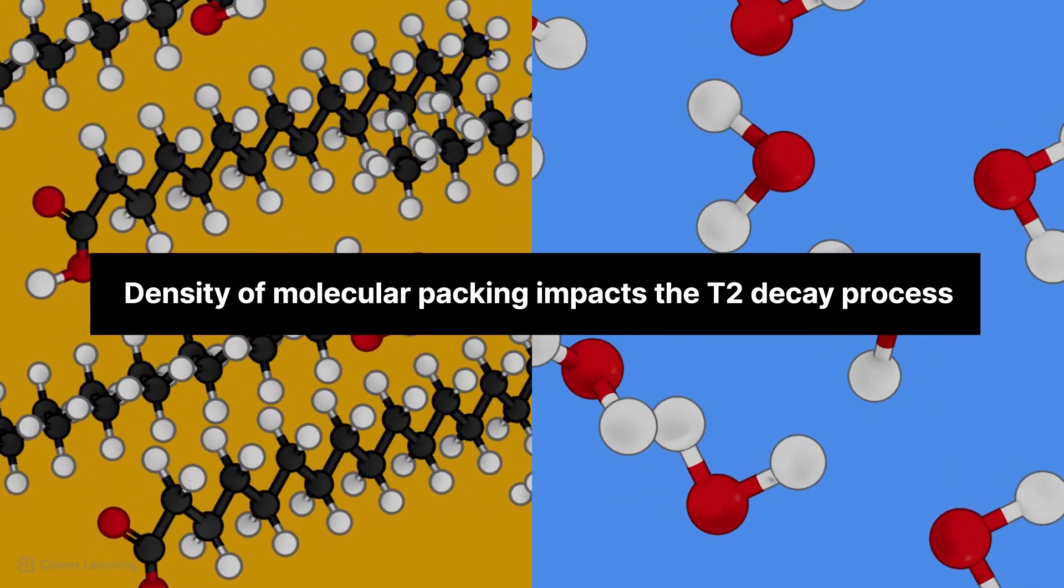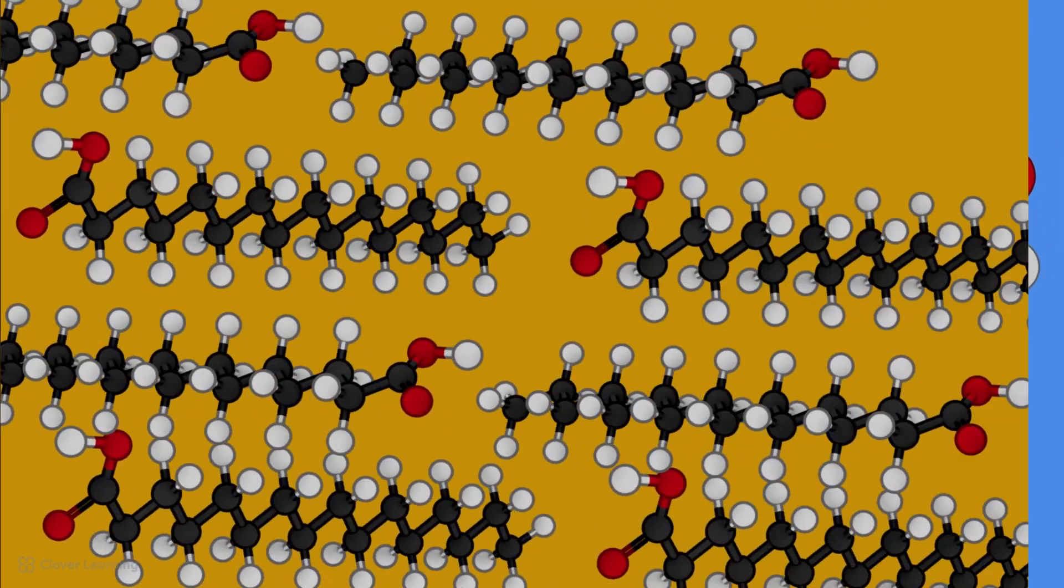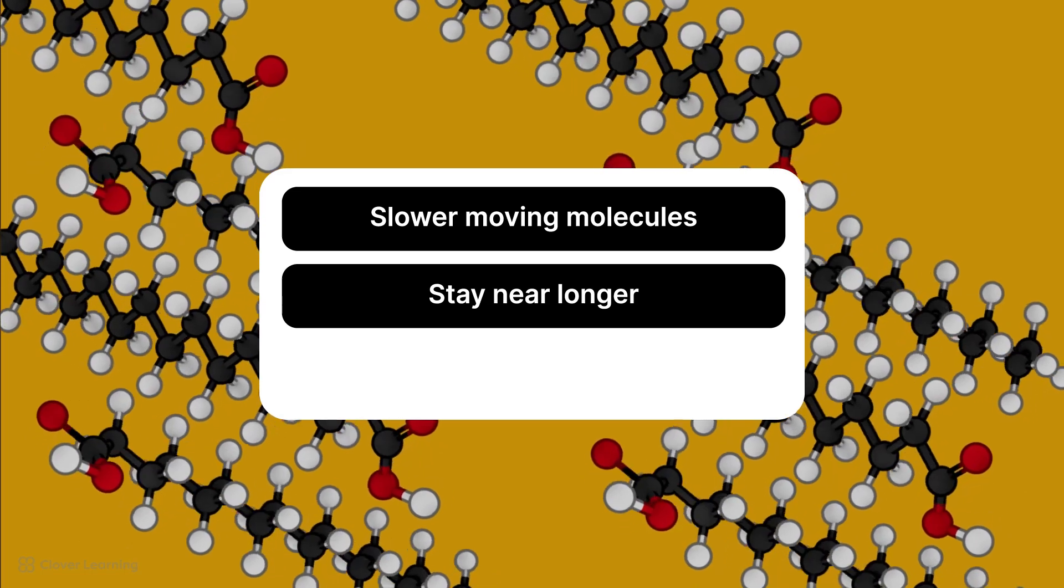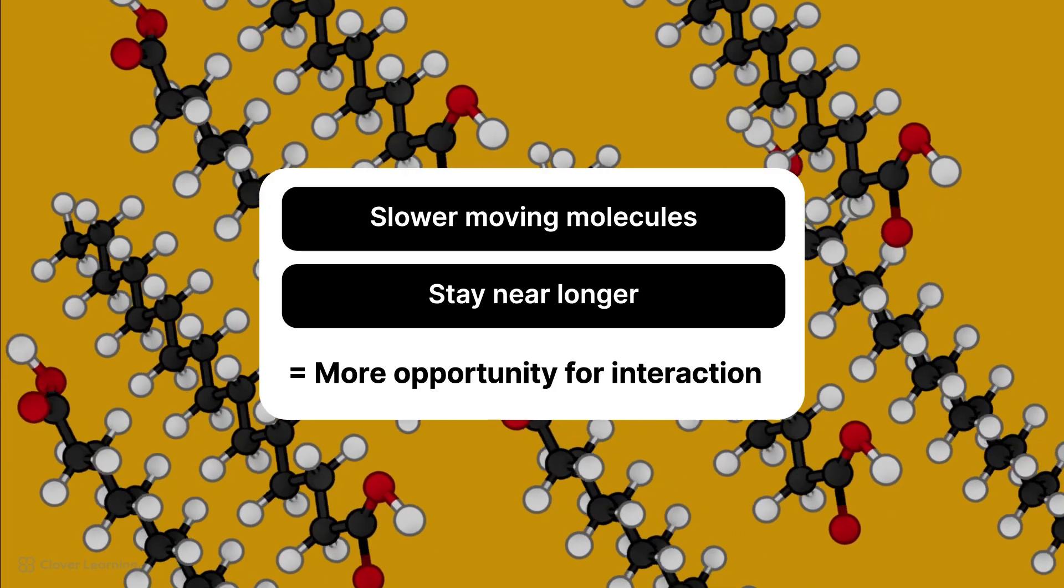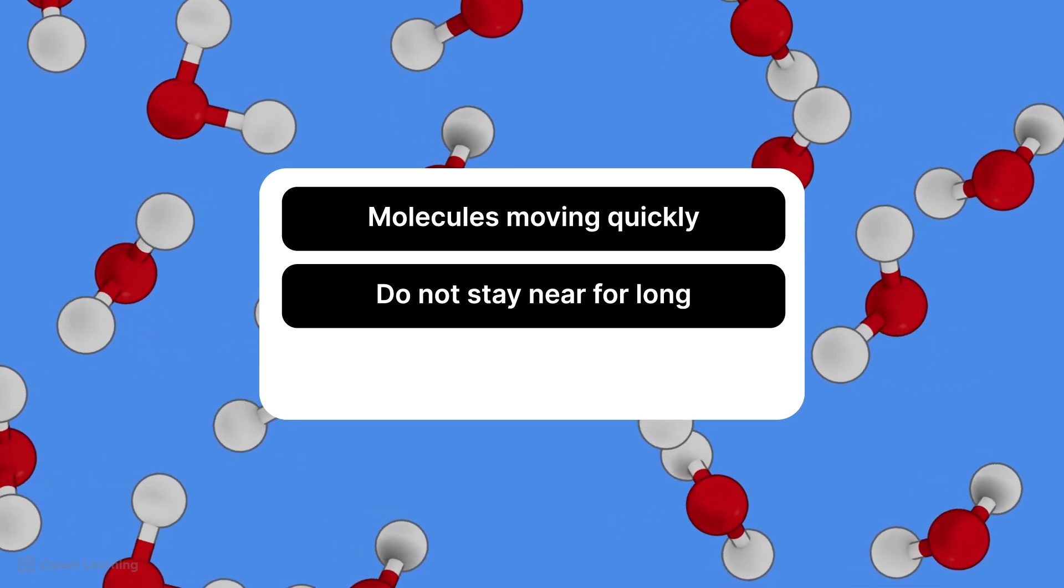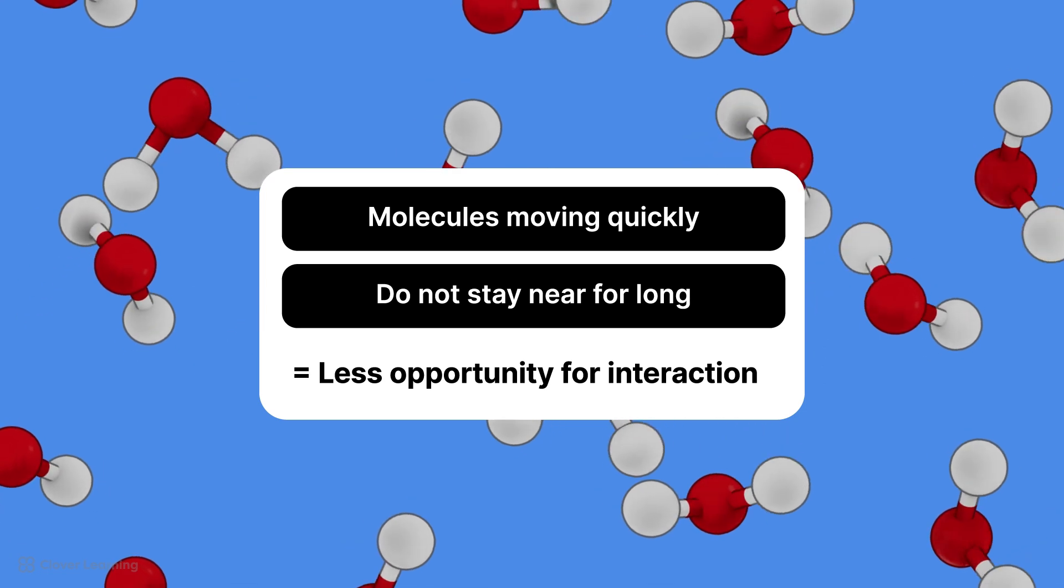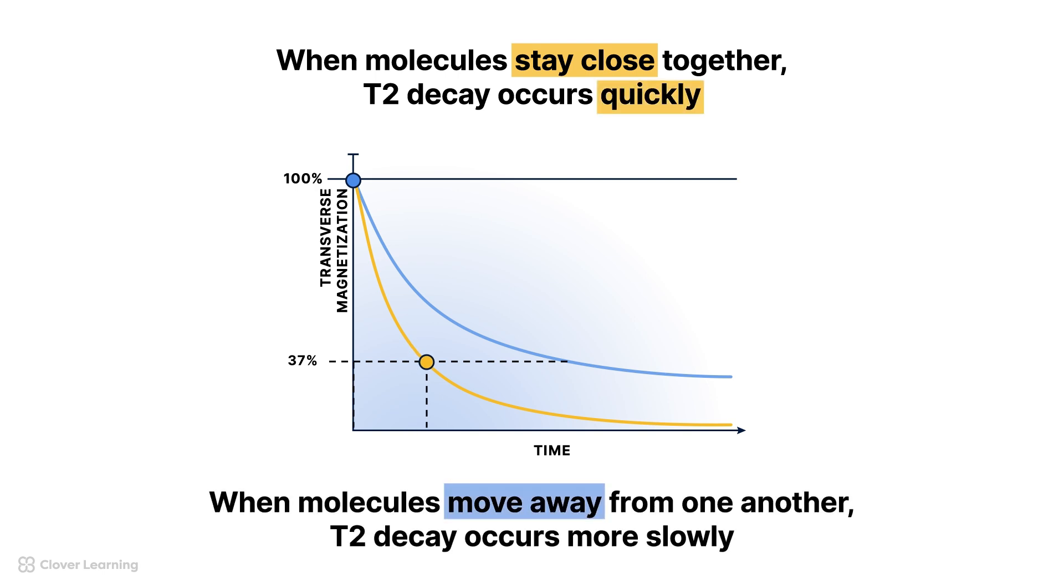The density of molecular packing, or how closely the molecules are packed together, impacts the T2 decay process. In environments with slower moving molecules that stay near one another longer, like in fat, there is more opportunity for interaction between the magnetic moments of neighboring hydrogen nuclei. In environments where molecules are moving quickly and do not stay near each other for long, like in water, there is less opportunity for interaction. When molecules stay close together, T2 decay occurs quickly. When molecules move away from one another, T2 decay occurs more slowly.